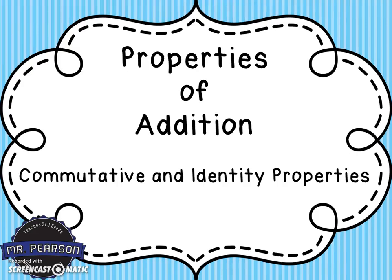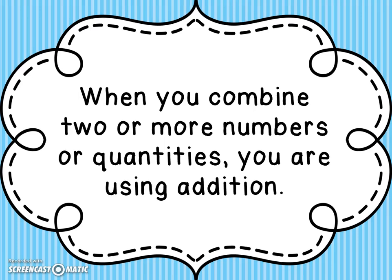Properties of addition: the commutative and identity properties. When you combine two or more numbers or quantities, you are using addition.